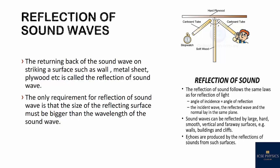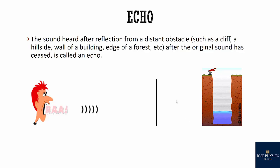What is echo? Echoes are produced by reflection of sound from such surfaces. The sound heard after reflection from a distant obstacle such as a cliff, hillside, wall of a building, edge of a forest, after the original sound has ceased is called an echo. If a person stands at some distance from a wall and produces a sharp sound, he hears two distinct sounds. One is the original sound heard almost instantaneously and another one is the sound heard after reflection from the wall which is known as echo.